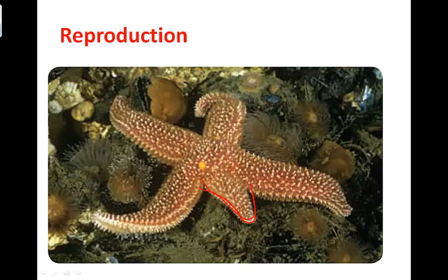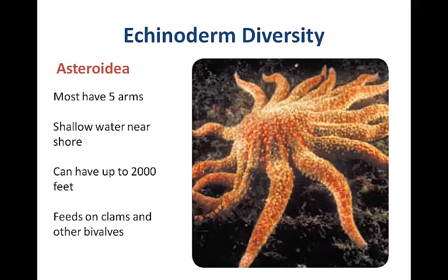Asteroidea is the sea star class. Most have five arms and live in shallow water, but they can be found at depths up to two thousand feet. They feed on clams and other bivalves. The more arms they have, the more tube feet, and therefore the greater force they can apply to pry open bivalves.